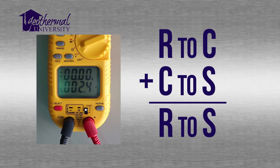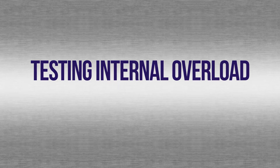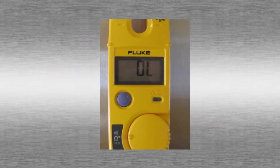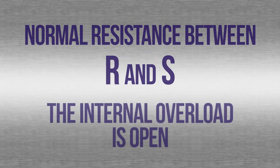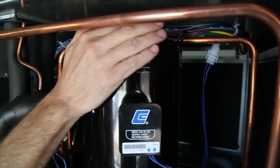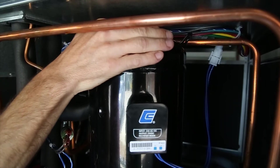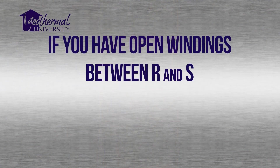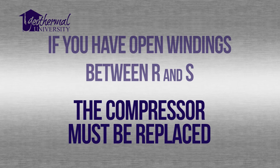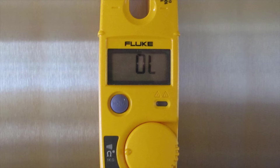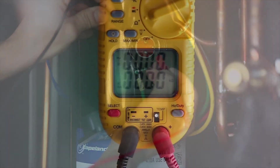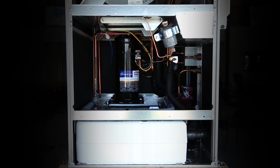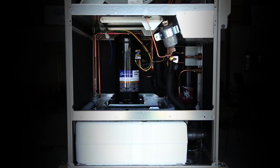Next, we'll test to see if the internal overload is open. The internal overload is between R and C, and S and C. If both readings indicate infinite resistance or no ohm readings, and there is a normal resistance between R and S, the internal overload is then open. Place your hand on top of the compressor. If the compressor overheats or draws high current, the overload protector should be open. You should never have infinite resistance between R and S. If you have open windings between R and S, you must replace the compressor. If when you measure infinite or no resistance from R to C and from S to C for both measurements, and normal resistance between start and run, the compressor internal overload is open. The compressor may have overheated or high current draw has caused the winding overload to open. It will likely reset after cooling.